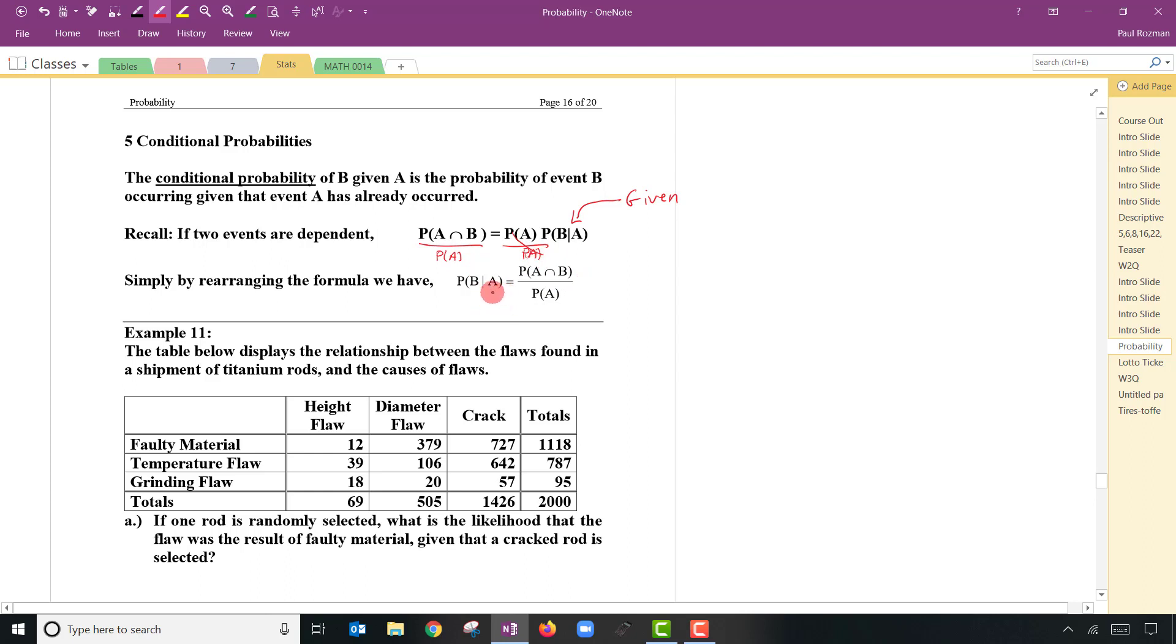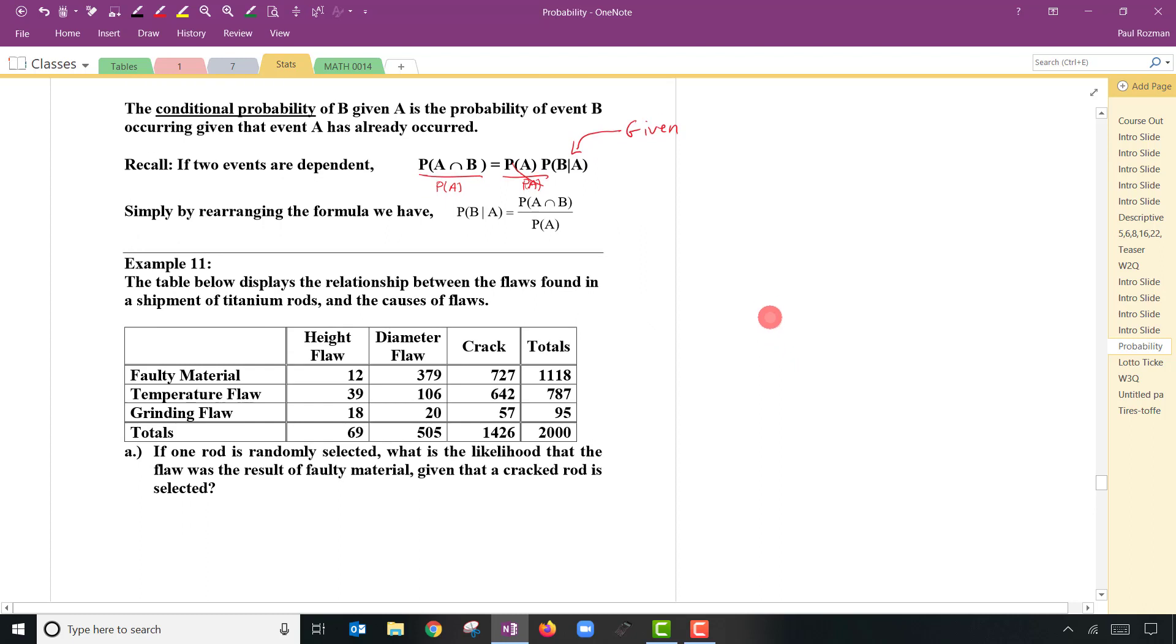So that allows us to answer questions when we have additional information, like if you know something about the problem, you can use that information to sort of modify the probability of something happening. So we'll say the probability of B happening, given that we know A already happened, is equal to the probability of A and B happening, divided by the probability of A. We'll do a little example here.